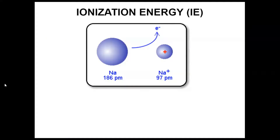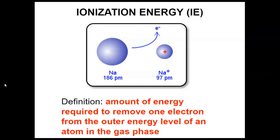Let's talk about ionization energy — this is a term we haven't heard before. Ionization energy is the amount of energy required to remove one electron from the outer energy level of an atom in the gas phase. The units are kilojoules per mole. Joules are a unit of energy, and mole is a way of counting a large number of atoms. For now, just recognize: if you see kilojoules, it must be ionization energy.